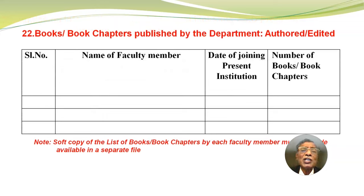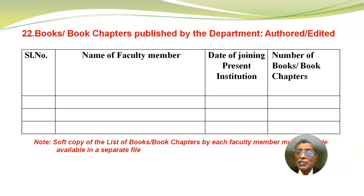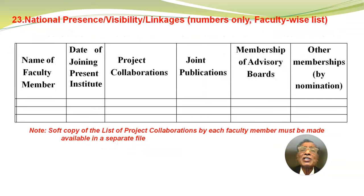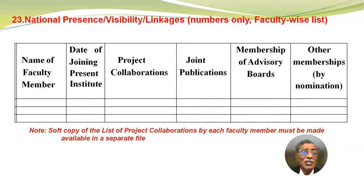Then books or book chapters published by the department, authored or edited — name of the faculty member, date of joining the present institution, number of books or book chapters. Soft copy of the list must be made available in a separate file. Then national presence or visibility or linkages — numbers only, faculty-wise list: name of faculty member, date of joining, project collaborations, joint publications, membership of advisory boards, and other memberships by nomination. Soft copy must be made available in a separate file.